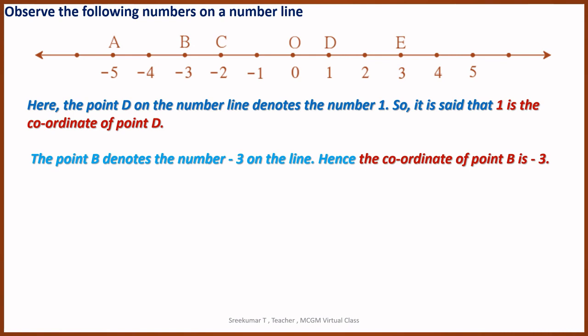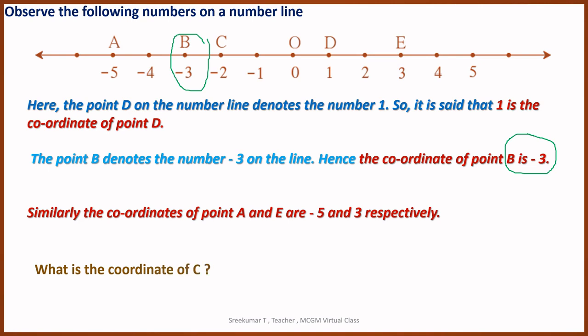For example, the coordinate of point B is minus 3. B is representing minus 3. The coordinate of point A is minus 5 and that of E is 3. So coordinate of point B means minus 3, A means minus 5, E means 3. We are designating an alphabet to those points. This is the concept of coordinate of points. If I ask you what is the coordinate of point C, you will say that the coordinate of C is minus 2. Understood?